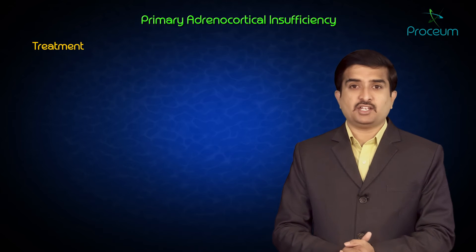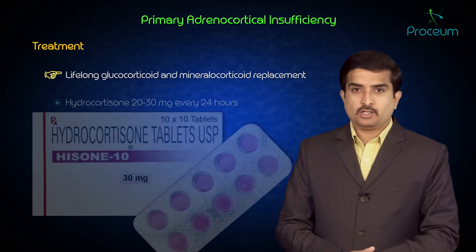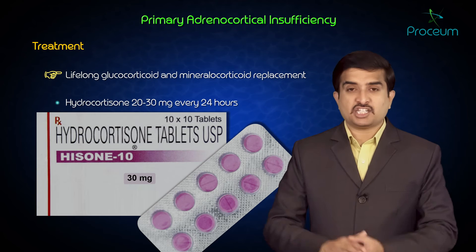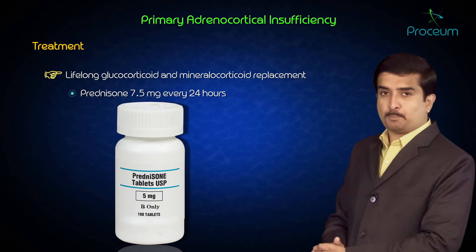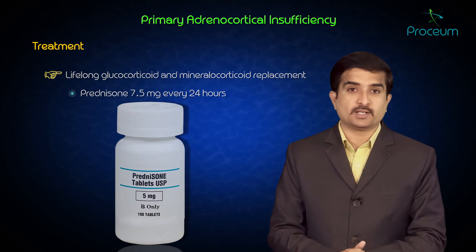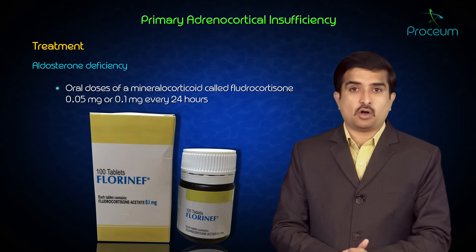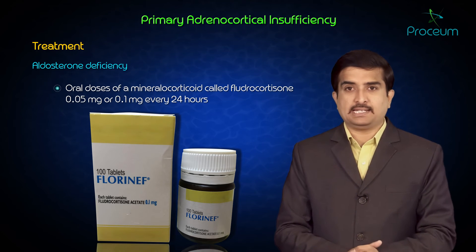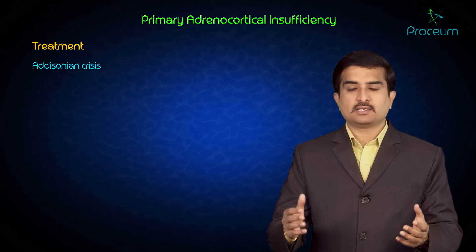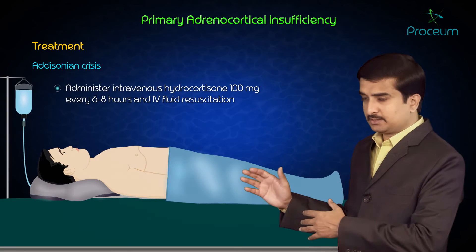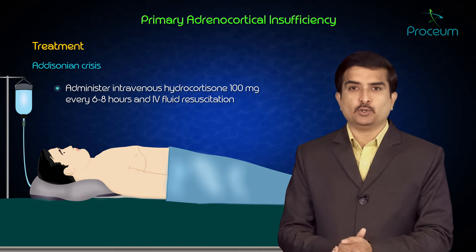Treatment of Addison's disease requires lifelong glucocorticoid and mineralocorticoid replacement. Hydrocortisone is given at 20–30 mg every 24 hours, and prednisone at approximately 7.5 mg every 24 hours. For aldosterone deficiency, the oral mineralocorticoid fludrocortisone is given at 0.05 or 0.1 mg every 24 hours. Addisonian crisis requires immediate treatment with intravenous hydrocortisone 100 mg every 6 to 8 hours, along with IV fluid resuscitation.